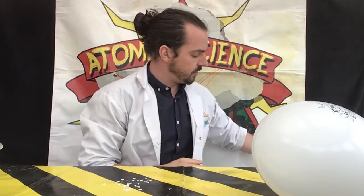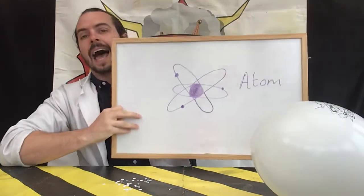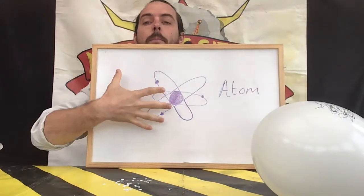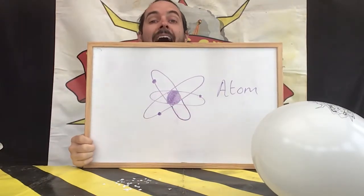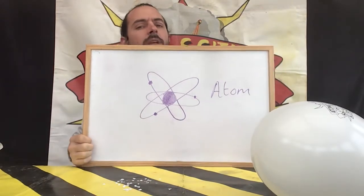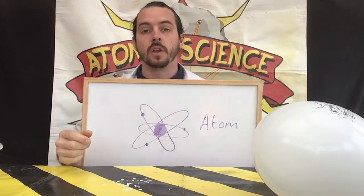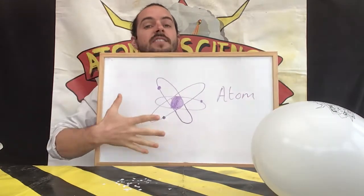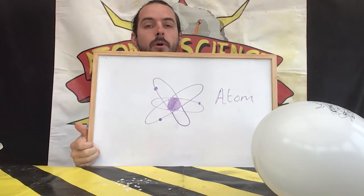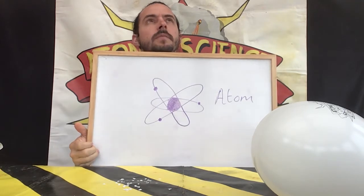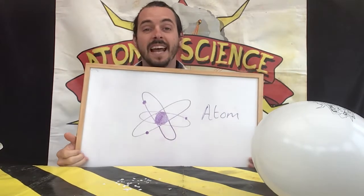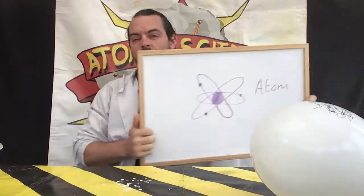Before we get on to our experiments, we need to learn what electricity is and how it works. To do that, I need to introduce you to something called an atom. Here is a picture of the model of an atom. Now we can't see one atom on its own because they're way, way too small, so instead we can draw this picture — this model. Can everyone say 'atom'? Awesome.